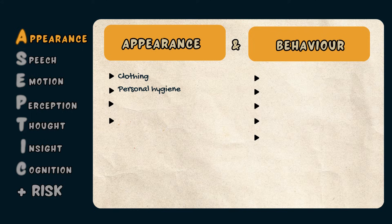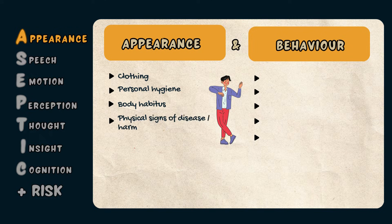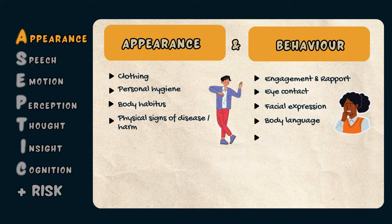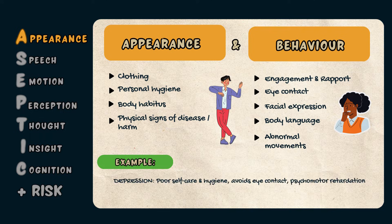Appearance refers to a basic description of the patient and can include what they're wearing, their levels of personal hygiene, body habitus, and any physical signs of disease or self-harm. Behavior refers to how well the patient engages during the consultation, including their level of eye contact, facial expression, body language, and the presence of any abnormal movements such as tremors, tics, involuntary movements, or posturing. In a patient with depression, you may note poor self-care, avoidance of eye contact, and psychomotor retardation.